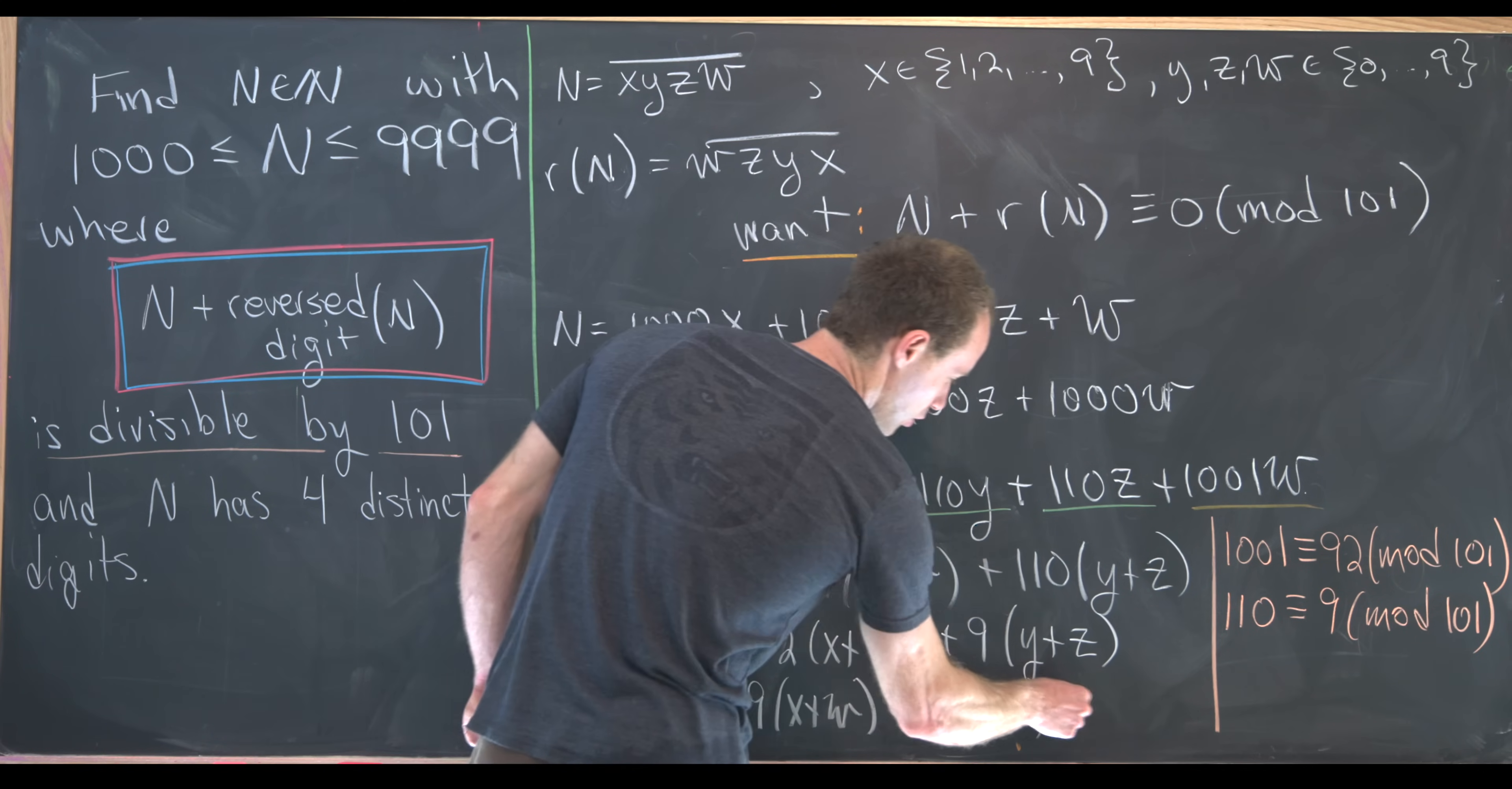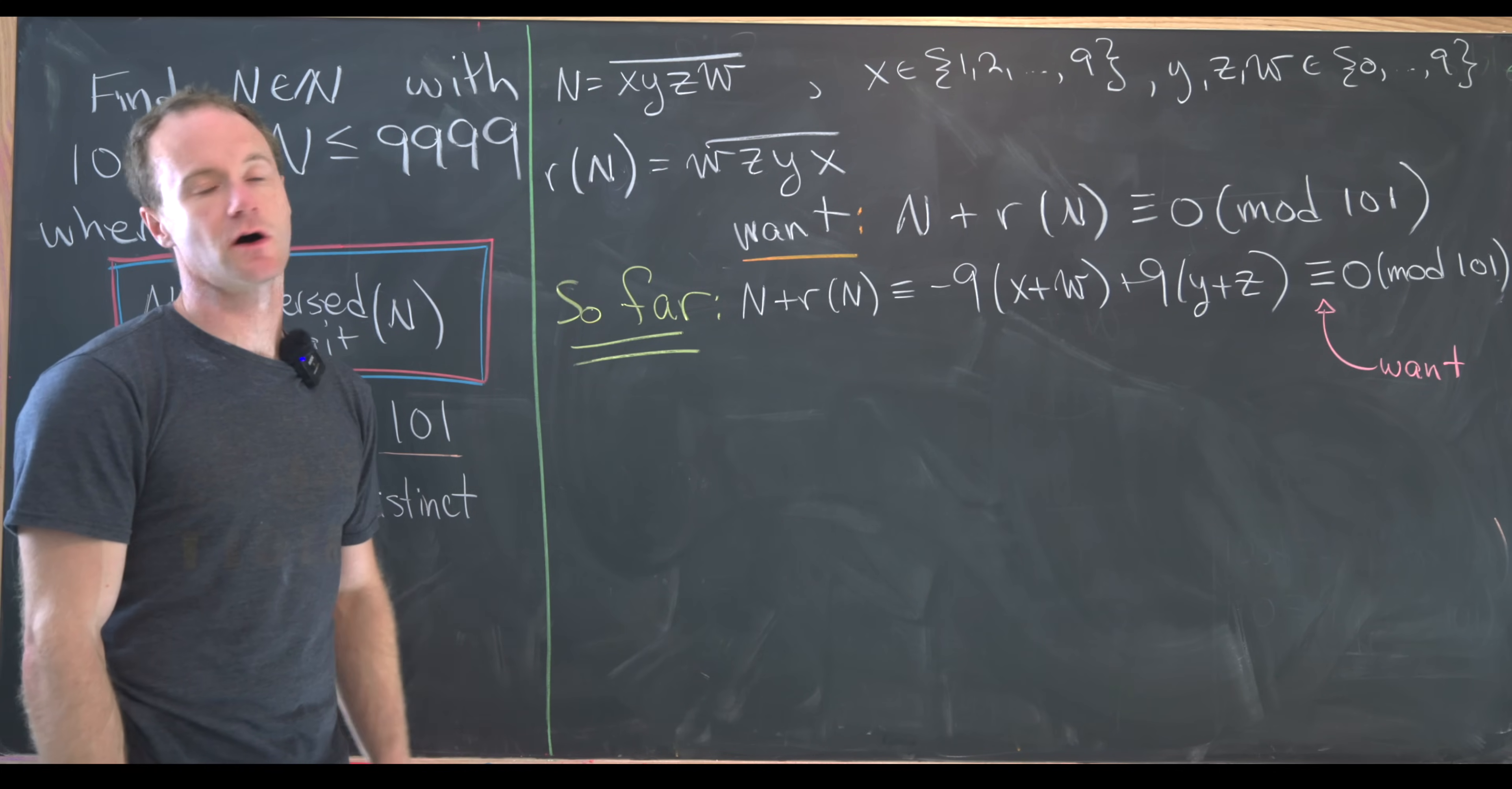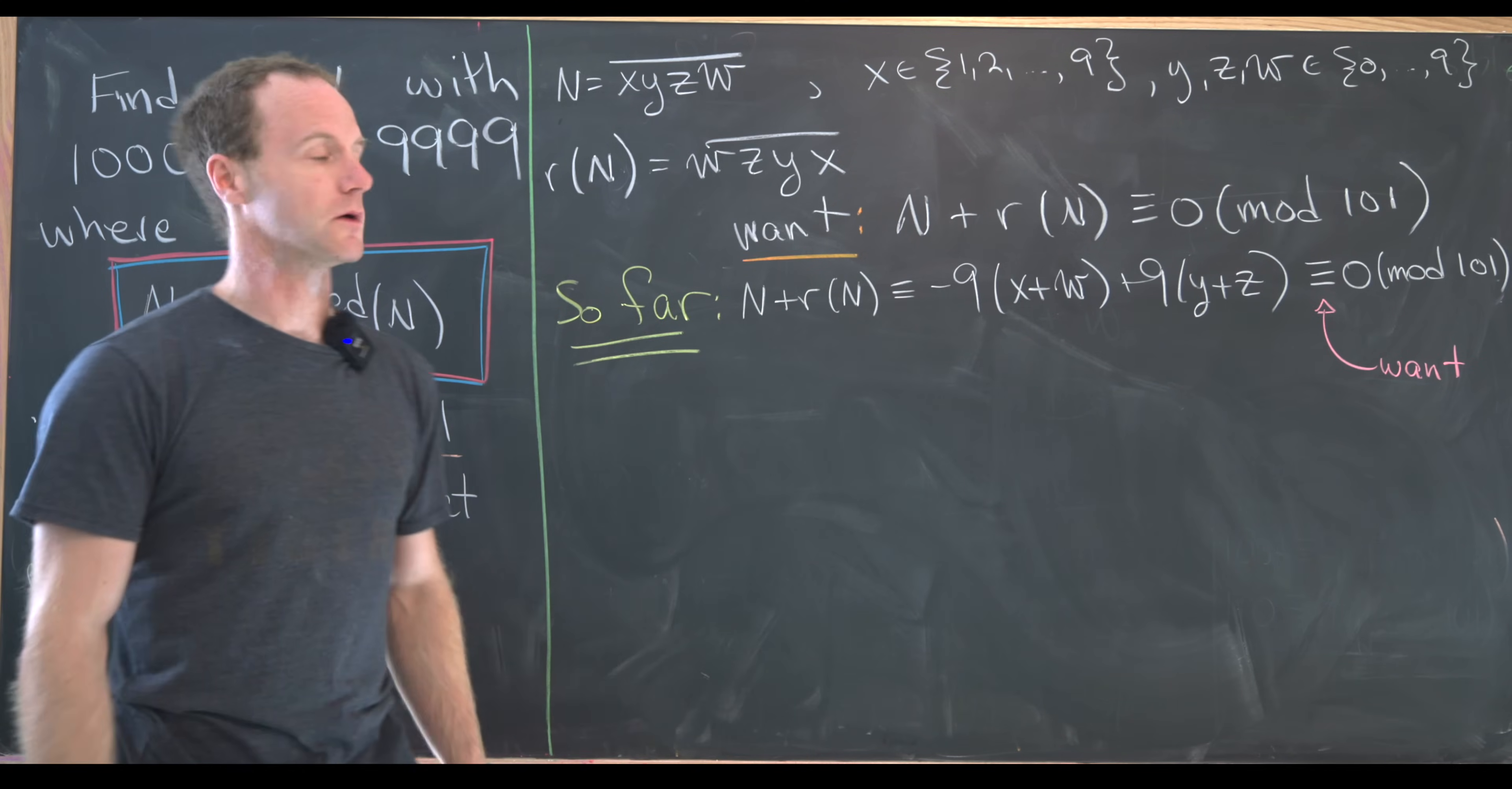Like I said, our goal is for that to be congruent to 0 mod 101. So let's maybe bring this step up and we'll finish it off. So far, we've determined a nice condition on N plus R of N. We need minus 9 times X plus W plus 9 times Y plus Z to be congruent to 0 mod 101. So that would tell us that this N plus reverse digit of N was divisible by 101.